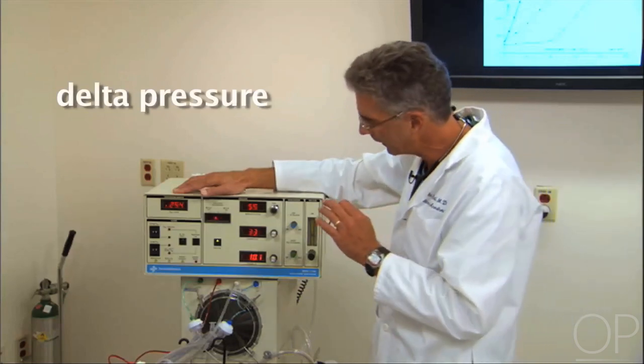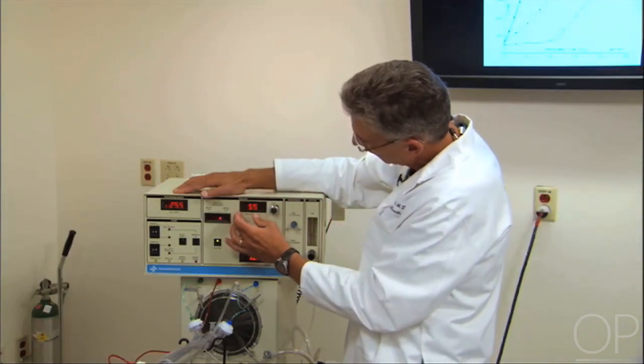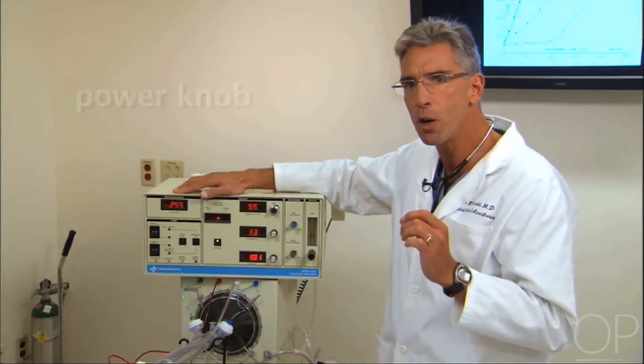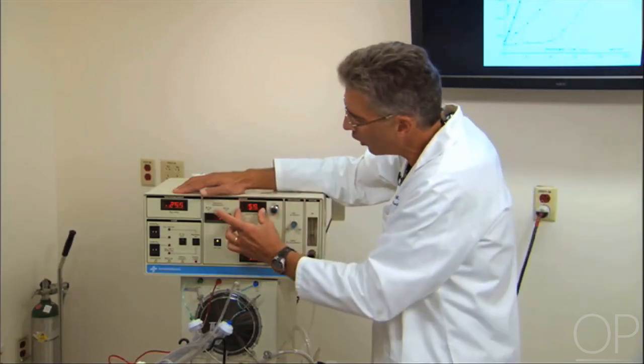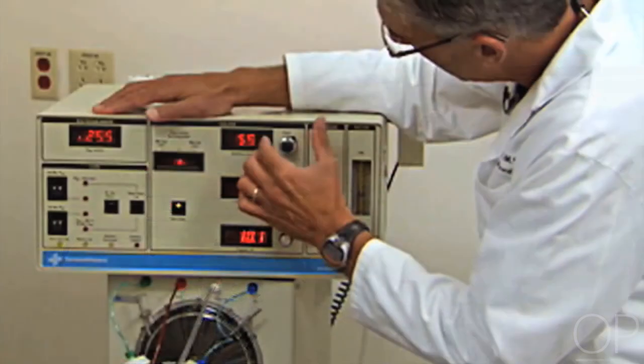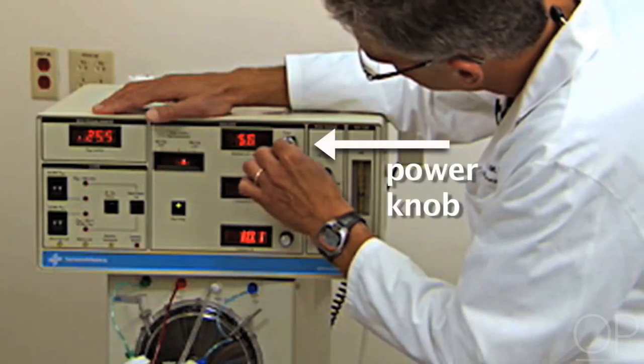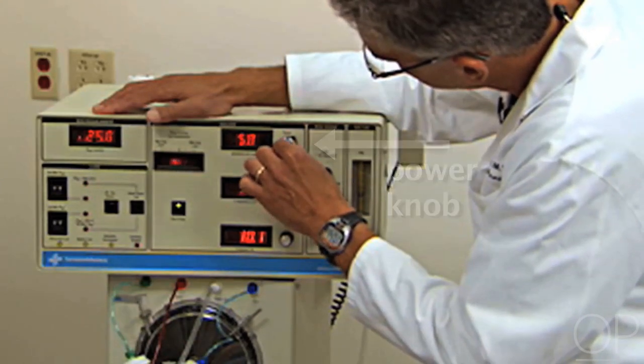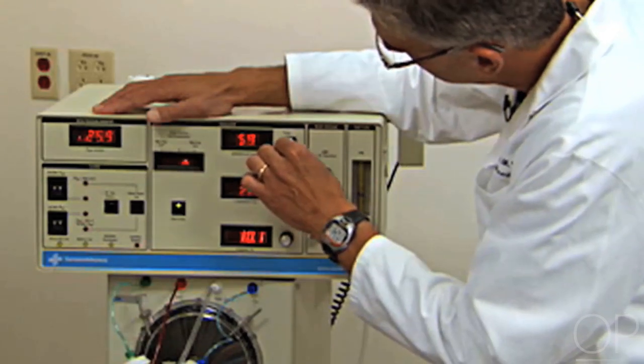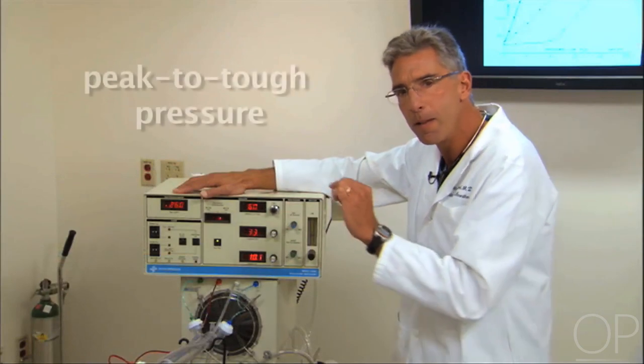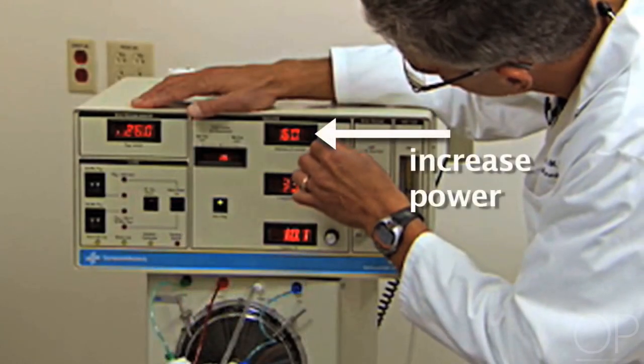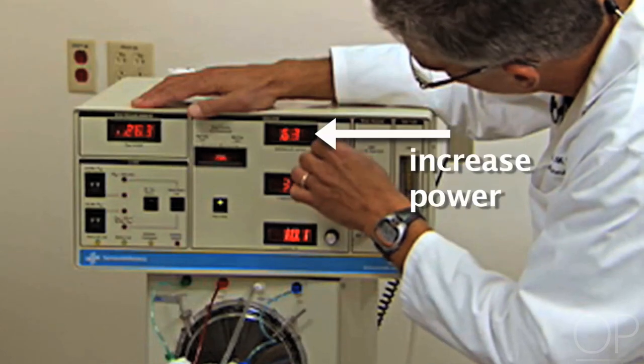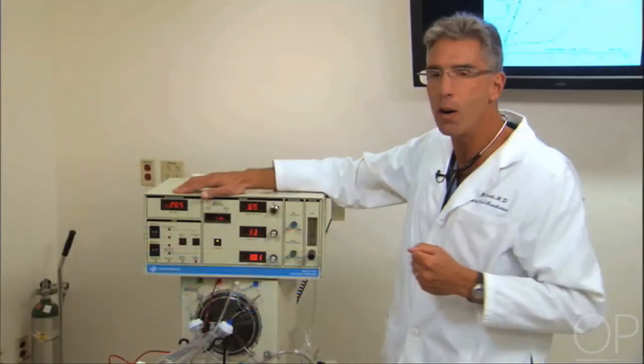Now the delta pressure is displayed here. It turns out we adjust the delta pressure by turning the power knob. So you actually increase power and that generates a higher delta pressure, which is a measured variable. And we increase power simply by turning this knob. So I'm now aiming to increase the delta P to 60 by increasing power. The delta P is the peak to trough pressure, again measured proximally in the ventilator circuit. And to increase it further to 65, we simply increase power in another increment.